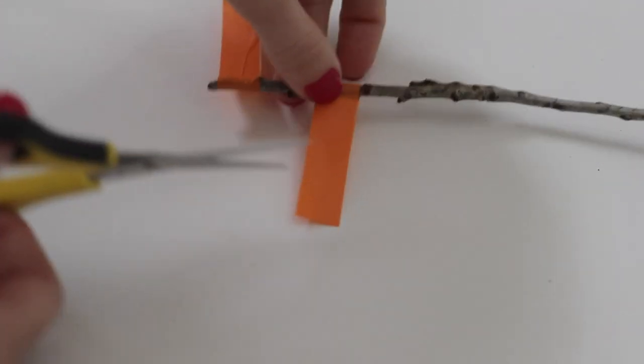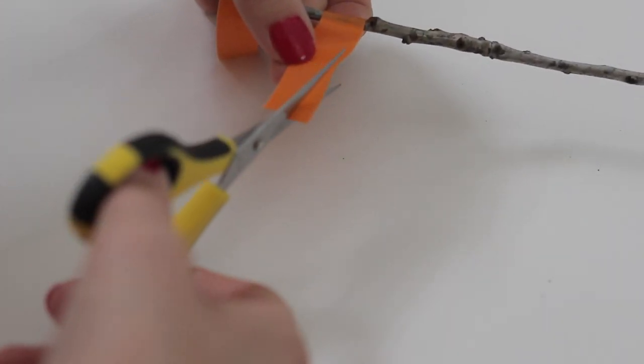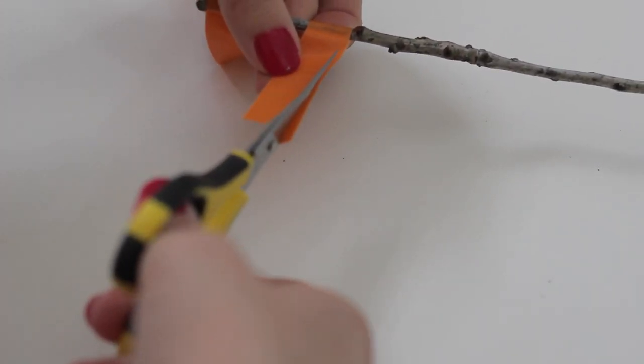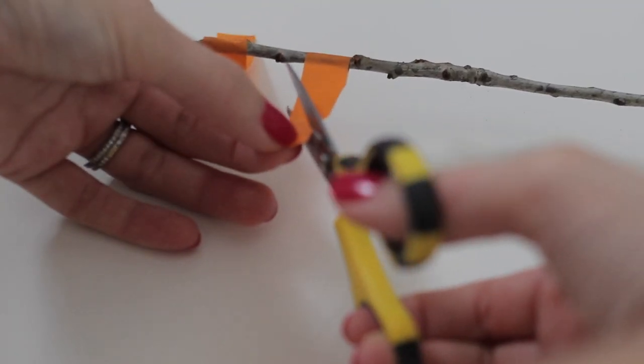Trim the end and then cut the flag into a more rounded, leaf-like shape. It doesn't have to be exact. The more different each one is, the more organic it will look.